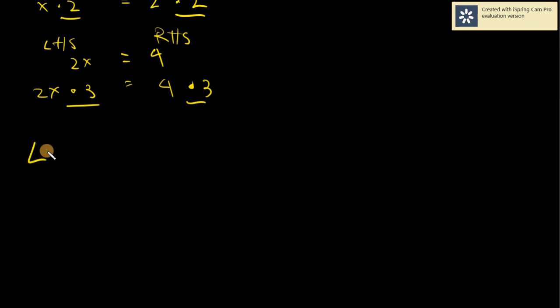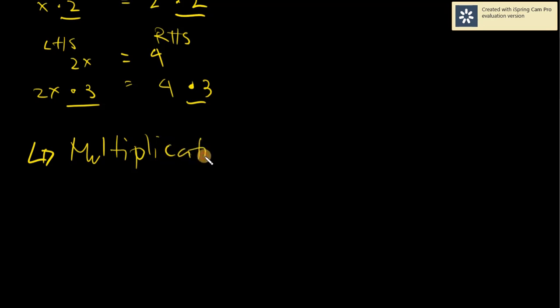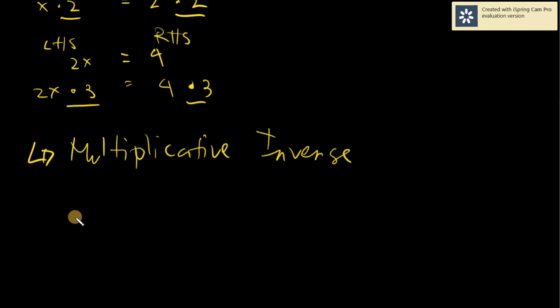Before we do this, in the previous video we did not discuss the additive inverse right away. In this case, we will discuss the multiplicative inverse. Multiplicative inverse simply states that you will find a number that, when you multiply it to your original number, you will get an answer of 1.